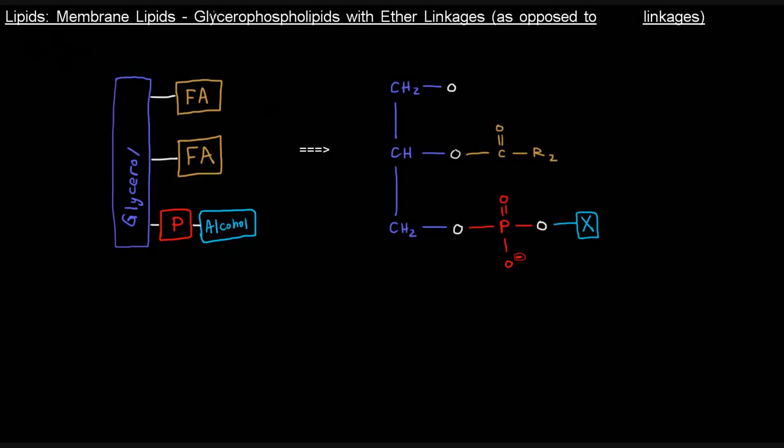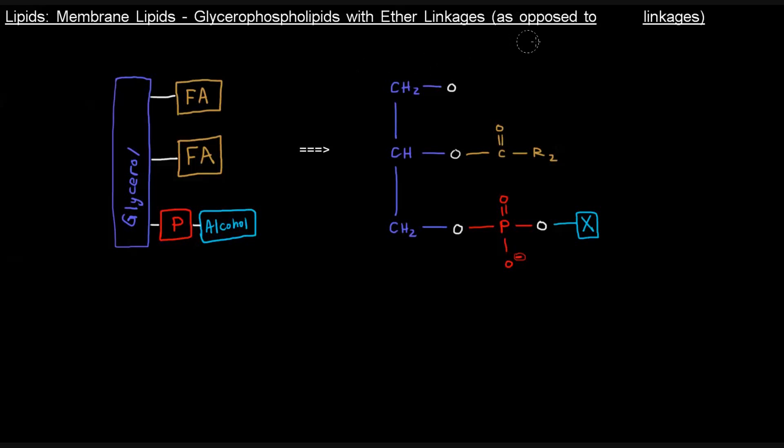So in the last video, we talked about glycerophospholipids. And those glycerophospholipids that we talked about had ester linkages, but there are some that have ether linkages as opposed to these ester linkages. The ester linkage I'm talking about is right here, for instance, between the second carbon of the glycerol backbone and this acyl group, this fatty acyl group. That's the ester linkage there.